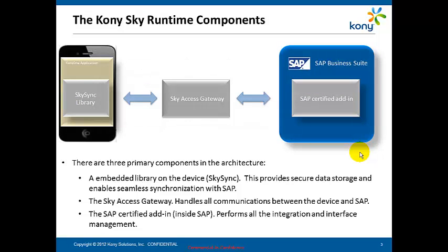There are three primary components in the architecture. An embedded library on the device, which we call SkySync, that provides secure data storage and enables seamless synchronization with the SAP back-end. In the middle, we have the Sky Access Gateway, which handles all communications between all the devices and the back-end SAP system. And then inside the SAP environment itself, we have a certified add-in component, which performs all the integration, interface management, data extraction, and transaction posting.